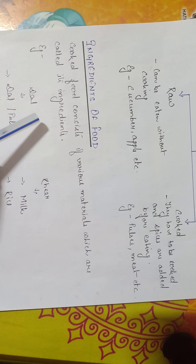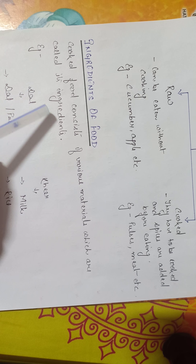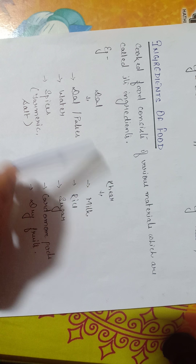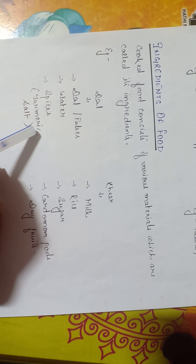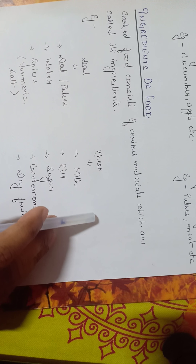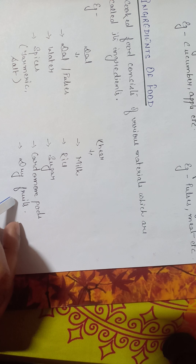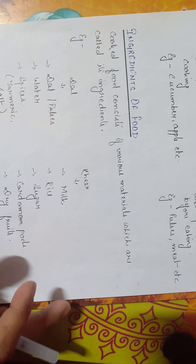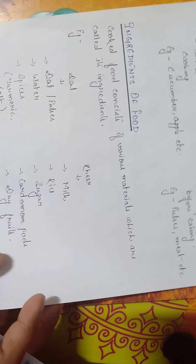Now coming to ingredients of food. Cooked food consists of various materials which are called its ingredients. We have taken two examples here: dal and kheer. For preparing dal, we require pulses, water, and spices which include turmeric and salt. And for preparing kheer, we require milk, rice, sugar, cardamom pods, and dry fruits. So here you can see the ingredients vary according to the food item which we are preparing.